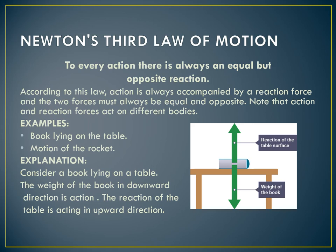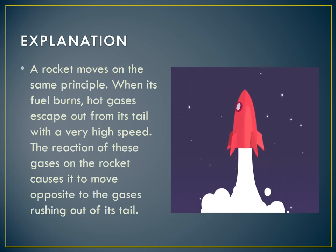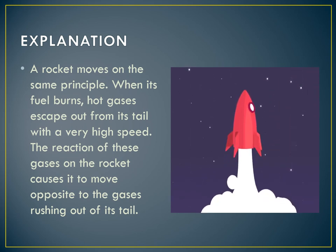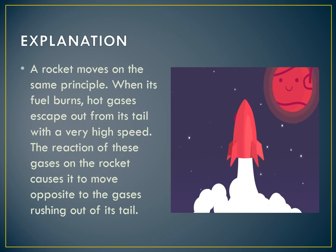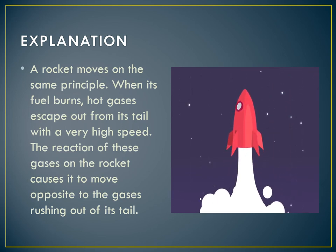Examples of Newton's third law include a book lying on a table and the motion of a rocket. For the book on the table, the weight of the book acting downward is the action force, and the reaction force of the table acting upward is the reaction. For the rocket, when the fuel burns, hot gases escape from its tail at very high speed — this motion of gases is the action. As a reaction, the rocket moves opposite to the gases in the upward direction.